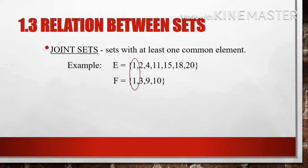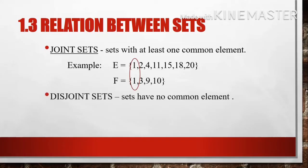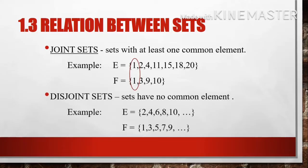Last but not least, we have disjoint sets — sets that have no common element. Example: set E whose elements are 2, 4, 6, 8, 10 — the set of even numbers — and set F whose elements are 1, 3, 5, 7, 9 — the set of odd numbers. Sets E and F are considered disjoint sets because they have no common element.